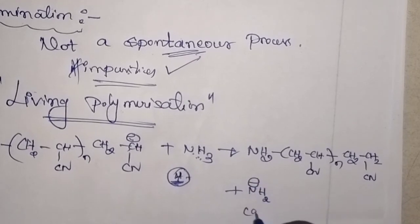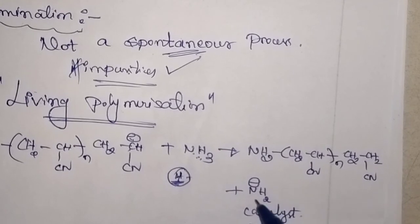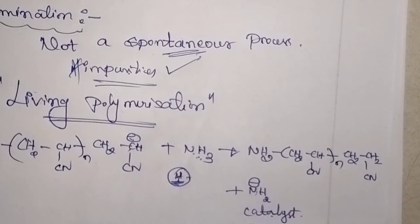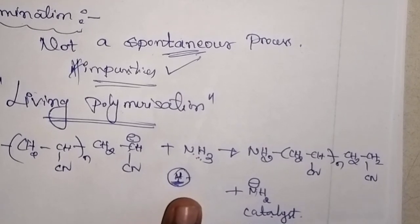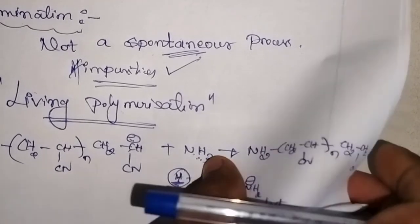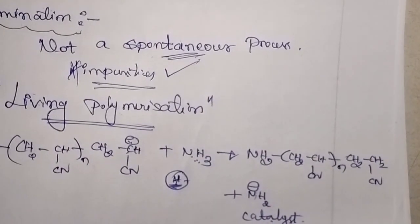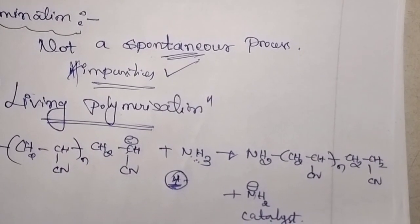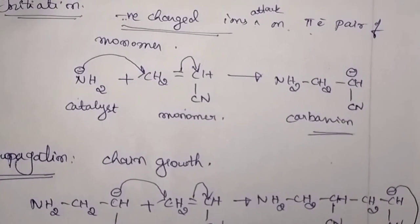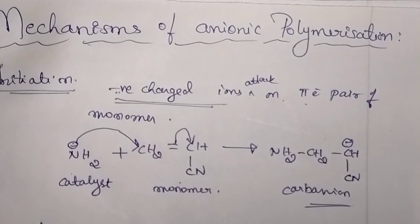So once again, if there is fresh monomer added, the NH2⁻ catalyst can carry out the initiation reaction and the polymerization may continue. This is about the termination of anionic polymerization. So this much covers the mechanism of anionic polymerization, or living polymerization. If you have any doubt in this mechanism, you can ask in the comment section. Thank you for watching.